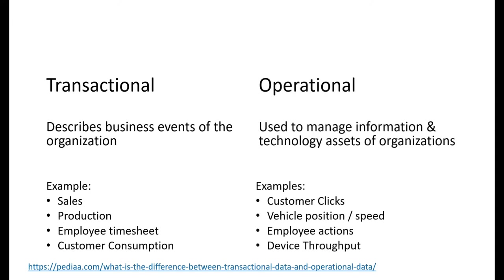On the other side, operational data is data used to manage information and technological assets in your organization — basically everything that doesn't relate to business activity itself. It's the cost of doing business. For example, at Microsoft in Redmond, we run shuttles from Seattle downtown to the Redmond campus. That doesn't generate any revenue — it's just a cost of doing business.